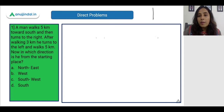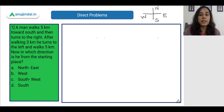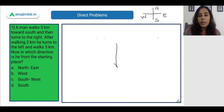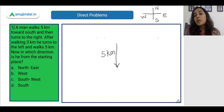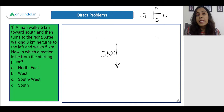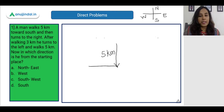I am going to draw my directions here — this is my North, East, South and West direction. So the man is walking five kilometers towards the South, which means he is going in the lower direction and has already covered five kilometers. Then he turns to the right. So when he is walking towards the South, his right is going to be my left — so his right is actually going to be this direction.